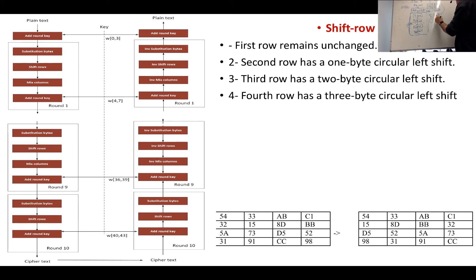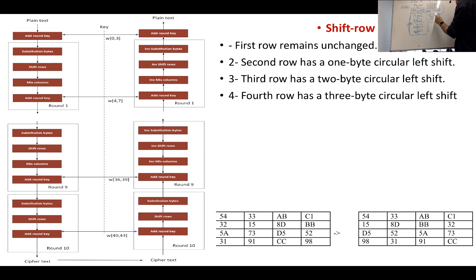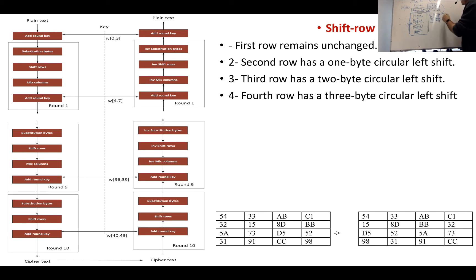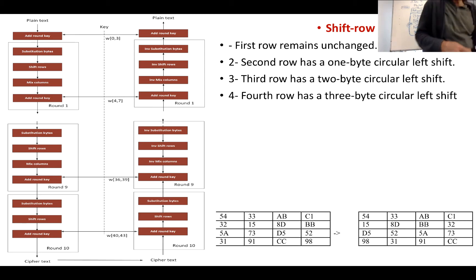The third row shifted by 2 gives us 11, 12, 9, 10. The fourth row has a 3-byte shift, so 1, 2, 3 ends up with 16, 13, 14, 15. So that shifts the bytes. I'll just show you that in code, and I'll show you the S box there too.